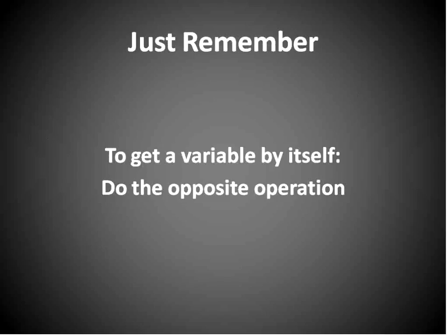All right. Just remember that you're trying to get the variable by itself, which is called isolating your variable. To do that, you do the opposite operation. If the operation's addition, you would do subtraction. If it's multiplication, you do division. You always want to do the opposite operation to try and get that variable all by itself. And then you can always check by substituting the answer that you get back into the original equation.